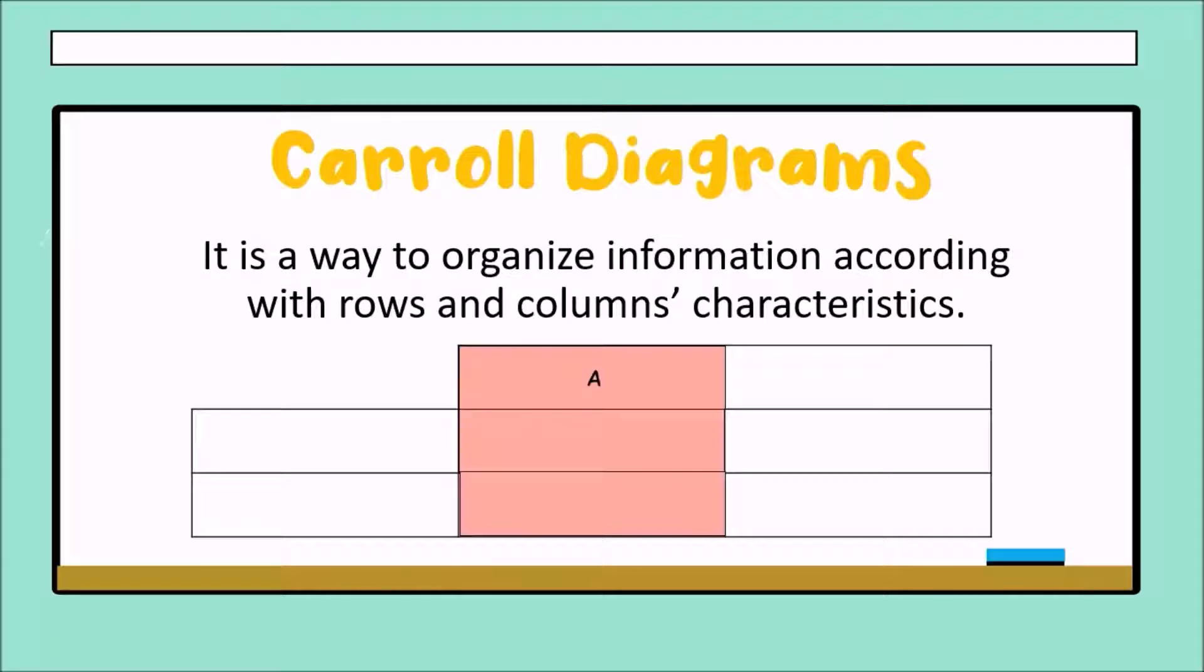For example, in column A, we have to put all information in this column. In column B, we have to put also all the information according with B in this column.